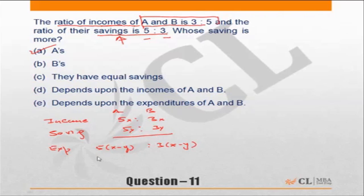Or which is nothing but 5 is to 3. So if the ratio of income and saving is the same, the ratio of expenditure will also be the same. Or out of these, if two of them have the same ratio, then the third one will also be the same.